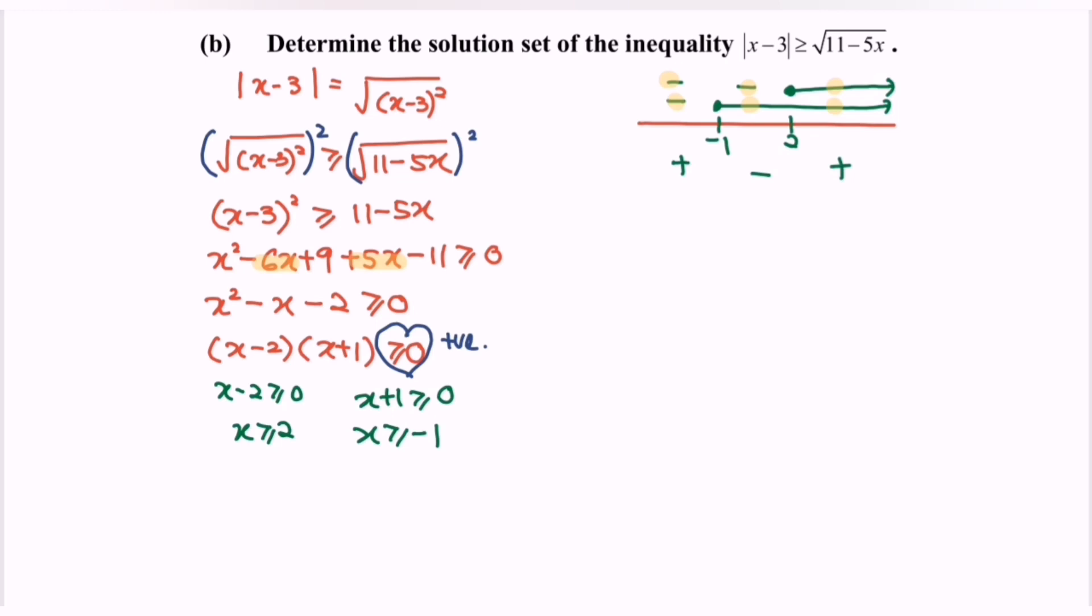By referring to the sign, the region will be a positive region. So meaning that here will be our answer. So finally negative infinity until negative 1, union from 2 until positive infinity.